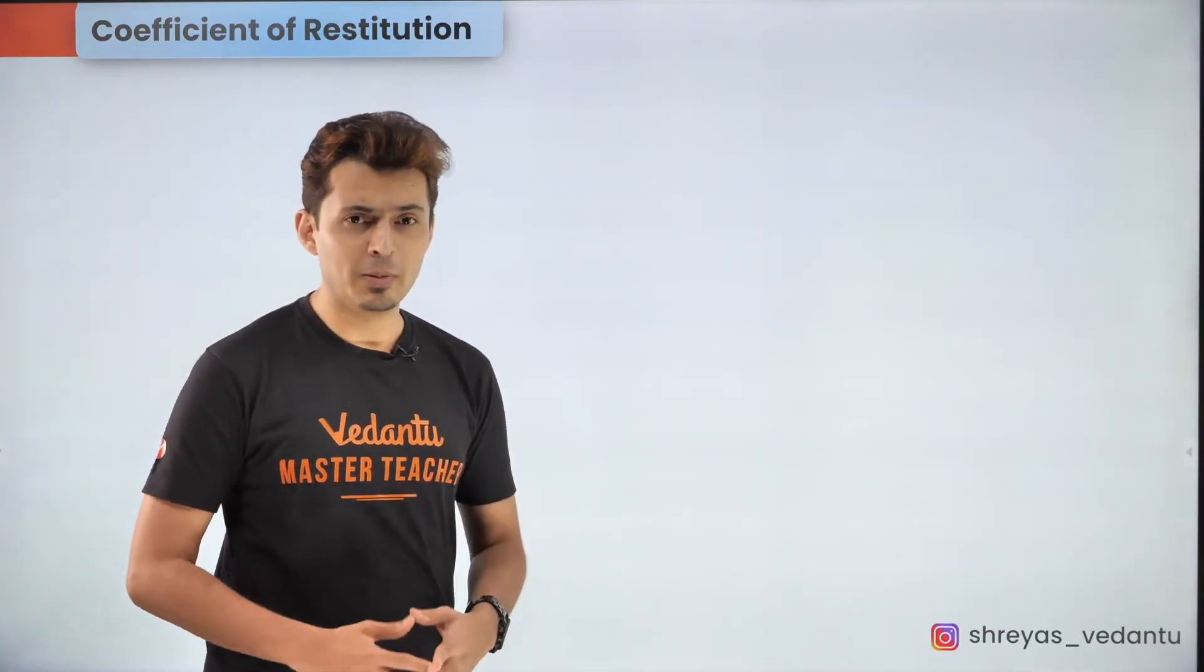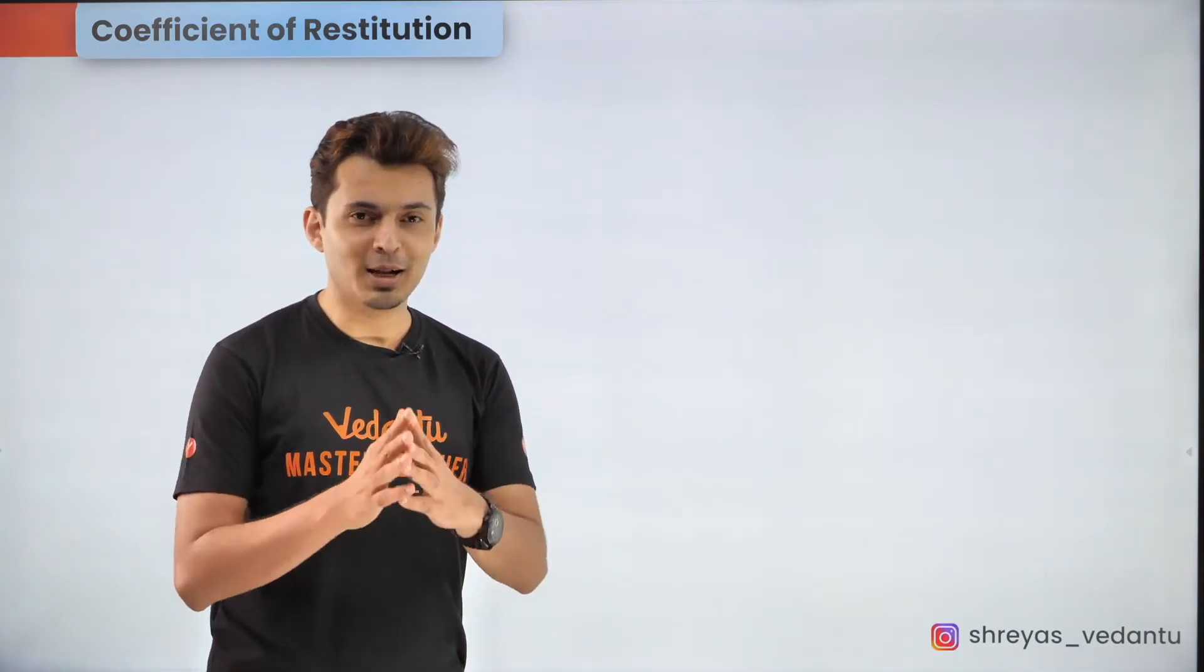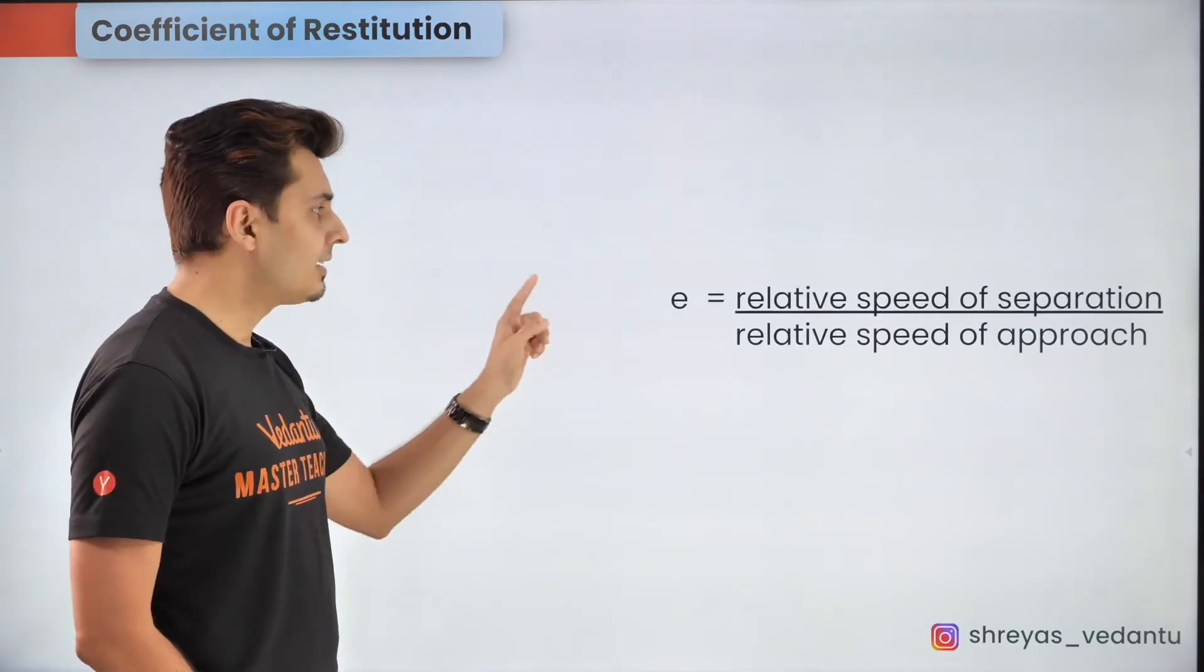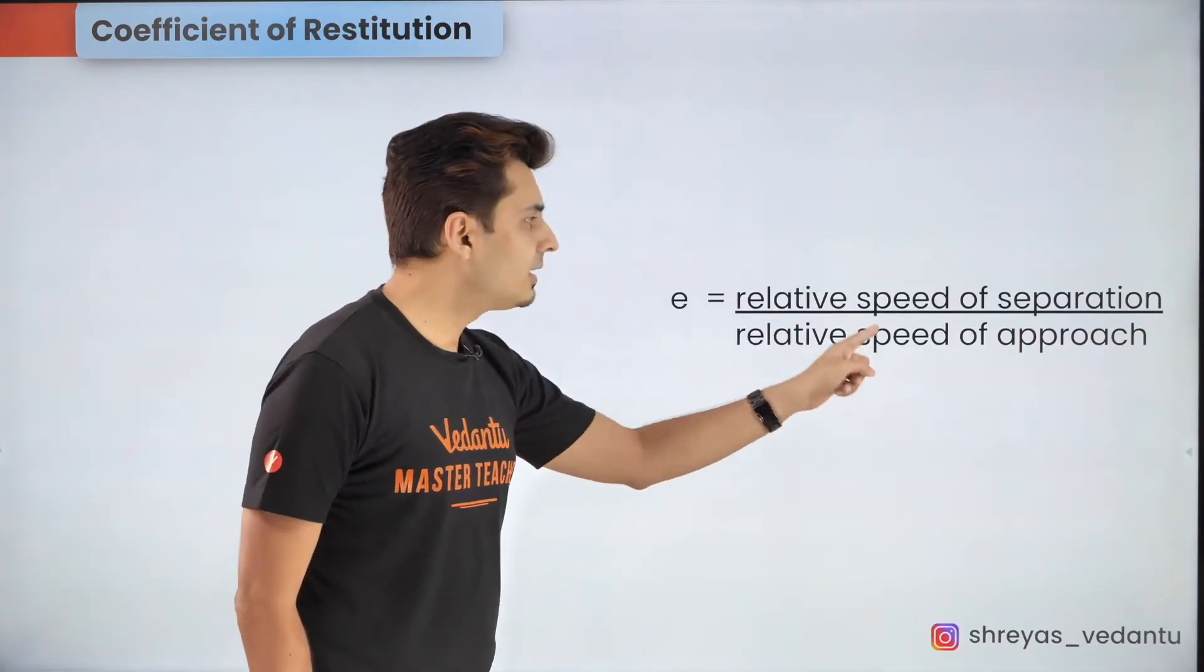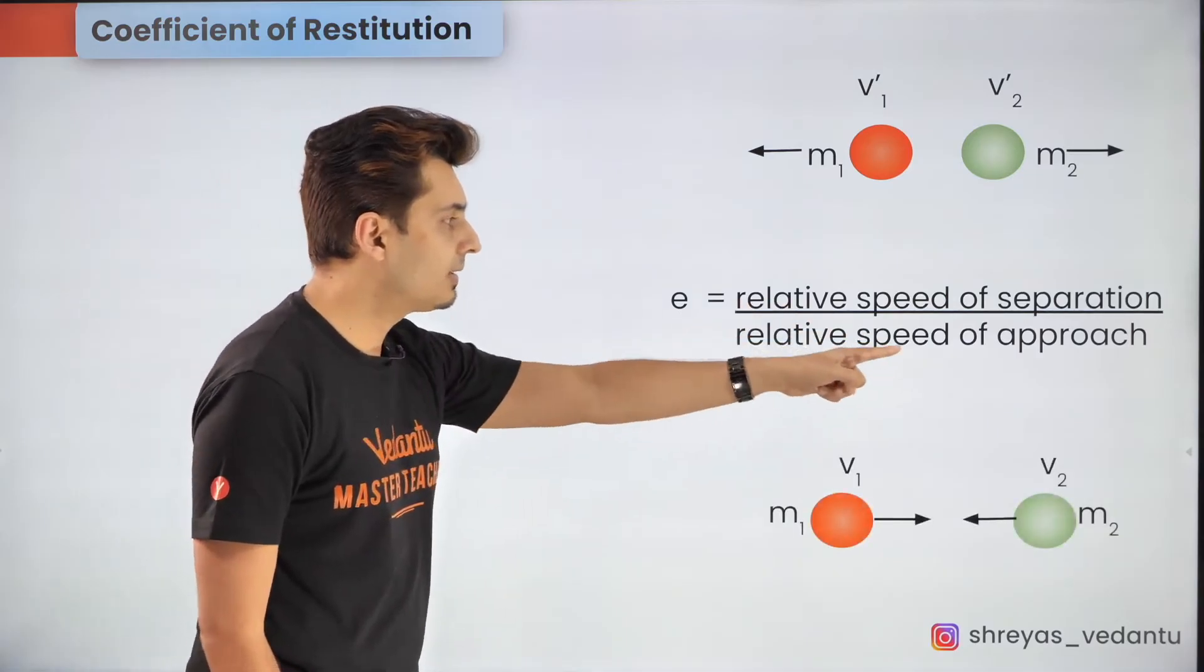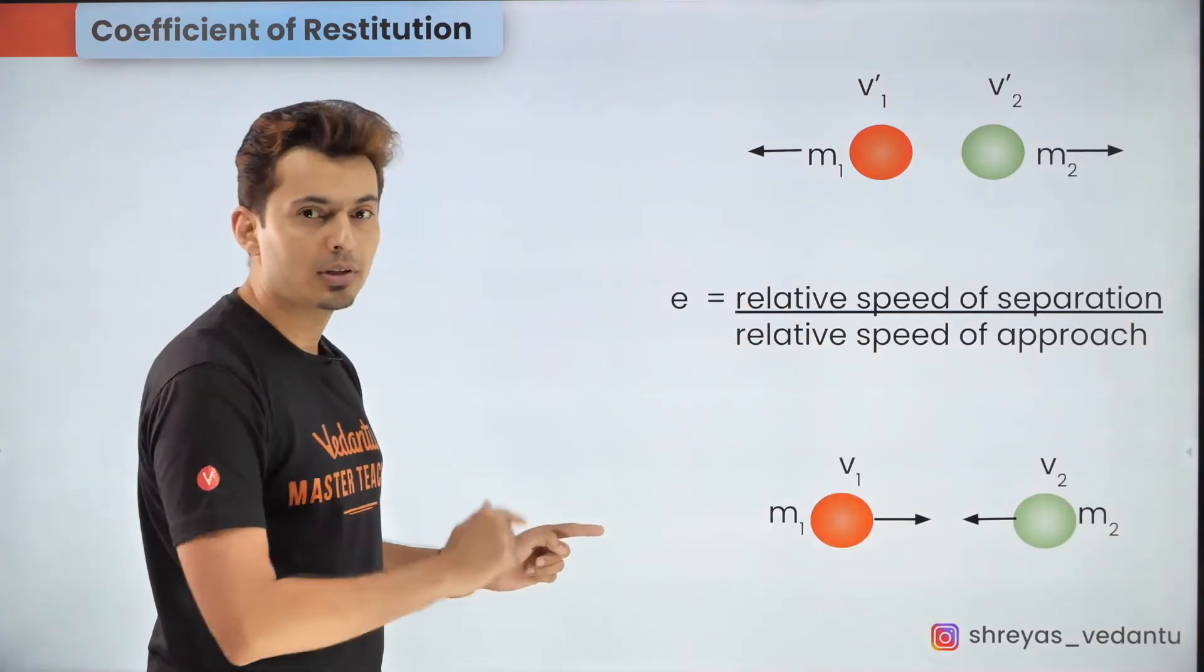You might often need more equations to solve the problem and that's where coefficient of restitution comes to the rescue. Now that's a constant for a given pair of bodies and it's nothing but the ratio of the relative speed of separation after the collision divided by the relative speed of approach before the collision.